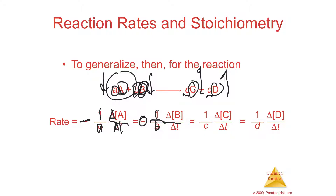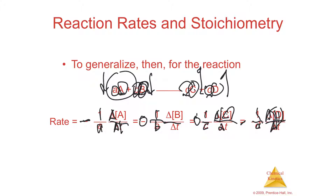Products on the right side are being produced, so they're positive — no negative sign. If you have a product C with coefficient c, it's one-over-c times Δ[C]/Δt. If you have product D with coefficient d, it's one-over-d times Δ[D]/Δt. Those brackets mean molarity — moles over liters — divided by time. The more you use this, the more it starts making sense.